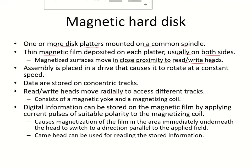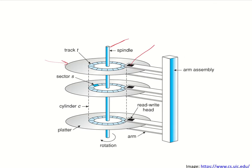Now, this whole assembly is placed in a drive which causes it to rotate at a constant speed. The spindle can be rotated by means of some circuitry, and this causes the platter to be rotated and to be placed under the read-write head.